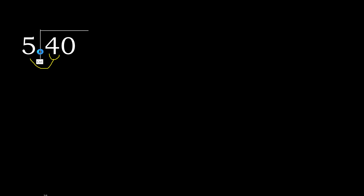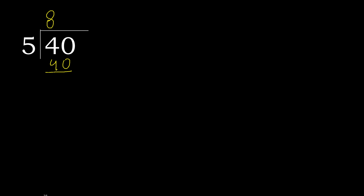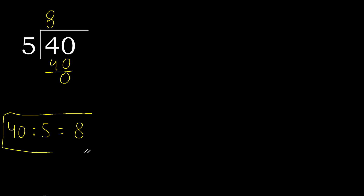40 divided by 5. 4 is less, therefore next. 40 is not less, therefore with 40: 5 multiplied by which number is nearest to 40 but not greater? 5 multiplied by 9 is 45, which is greater. 5 multiplied by 8 is 40, which is not greater. 40 minus 40 is 0, and that is not a number, therefore finish it. Therefore, 40 divided by 5 is 8.